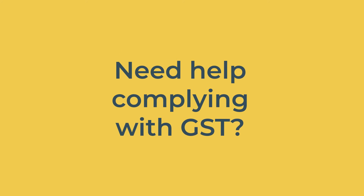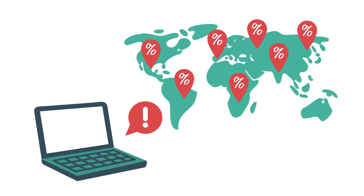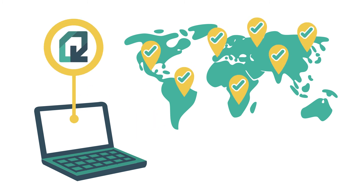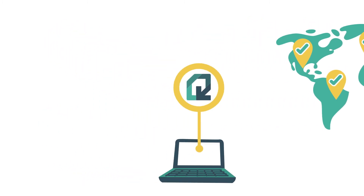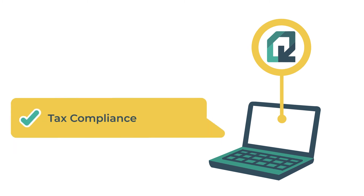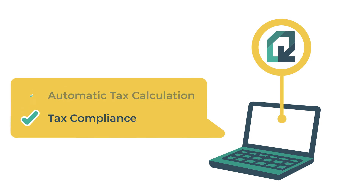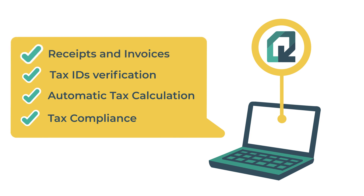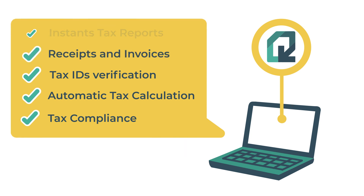Need help complying with GST? Once you're registered, Quaderno can help you comply with laws in Canada and anywhere in the world. We're tax-compliant software that handles GST, VAT, and sales tax for your online business. We automatically calculate tax, verify business tax IDs and B2B sales, send receipts and invoices, and provide instant tax reports for sales in any country.